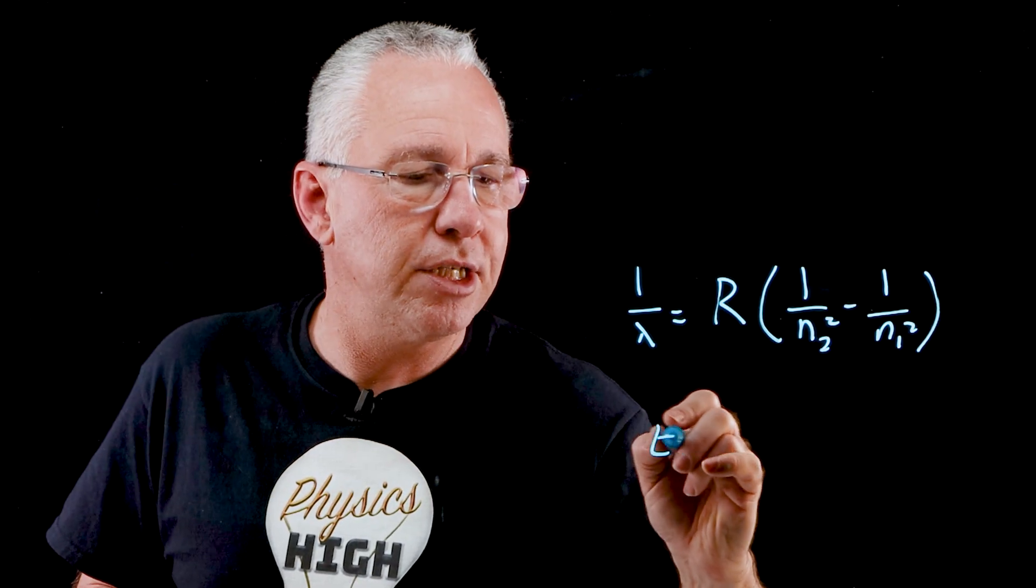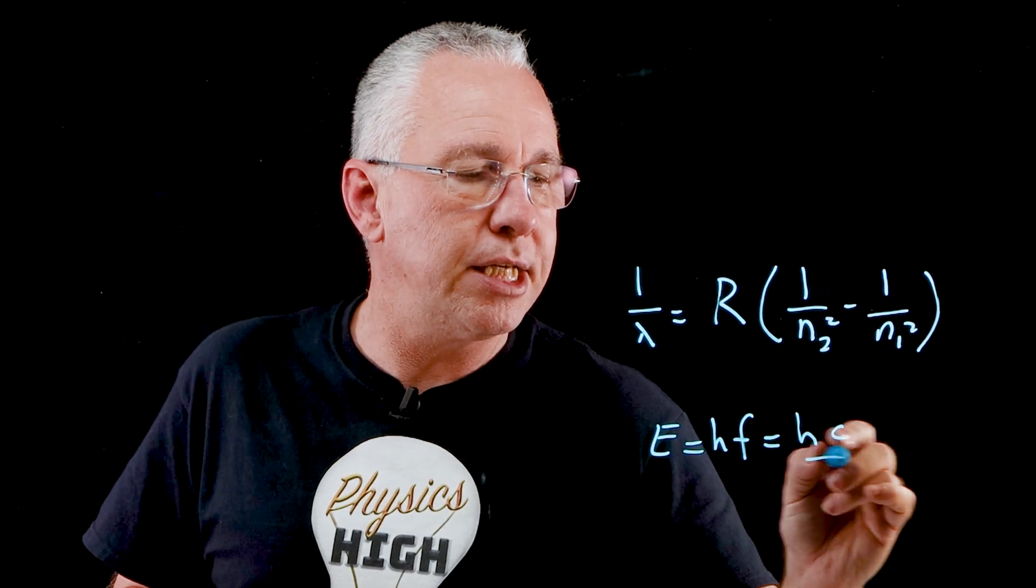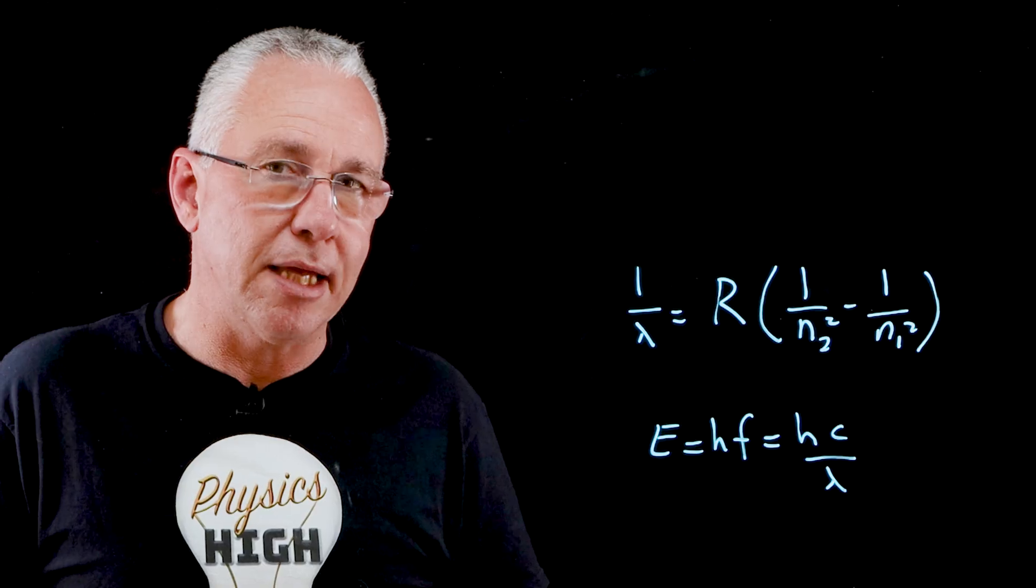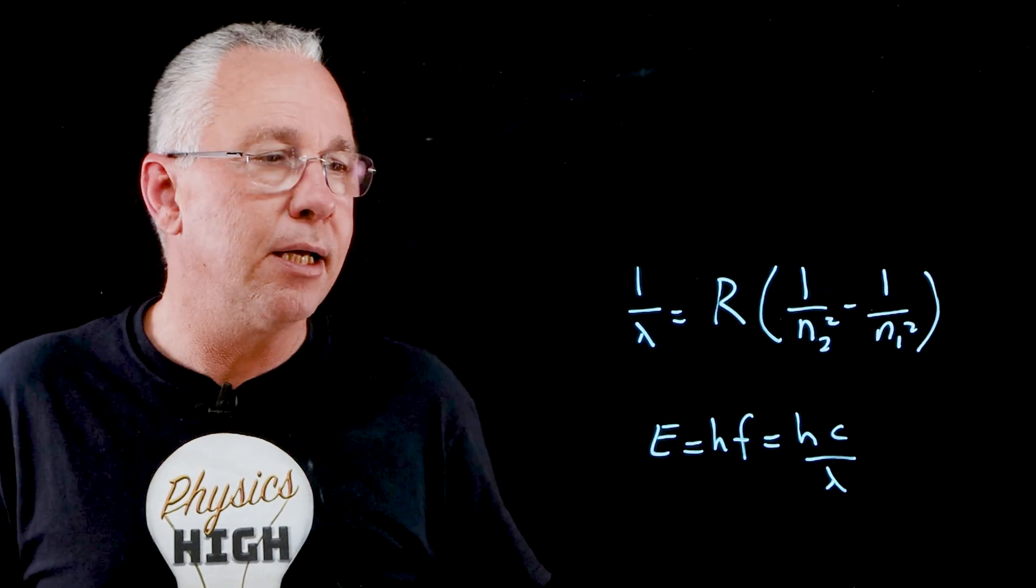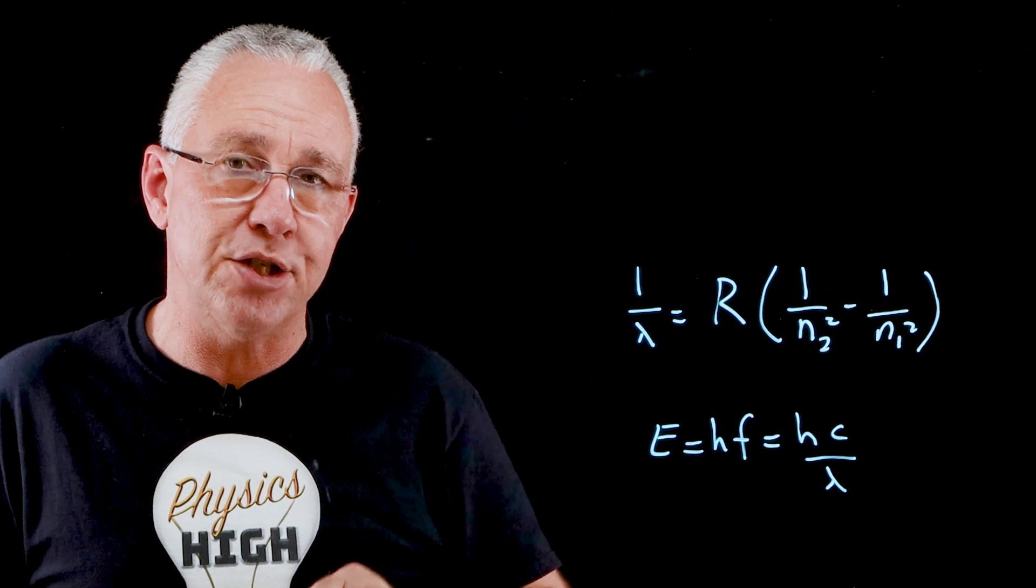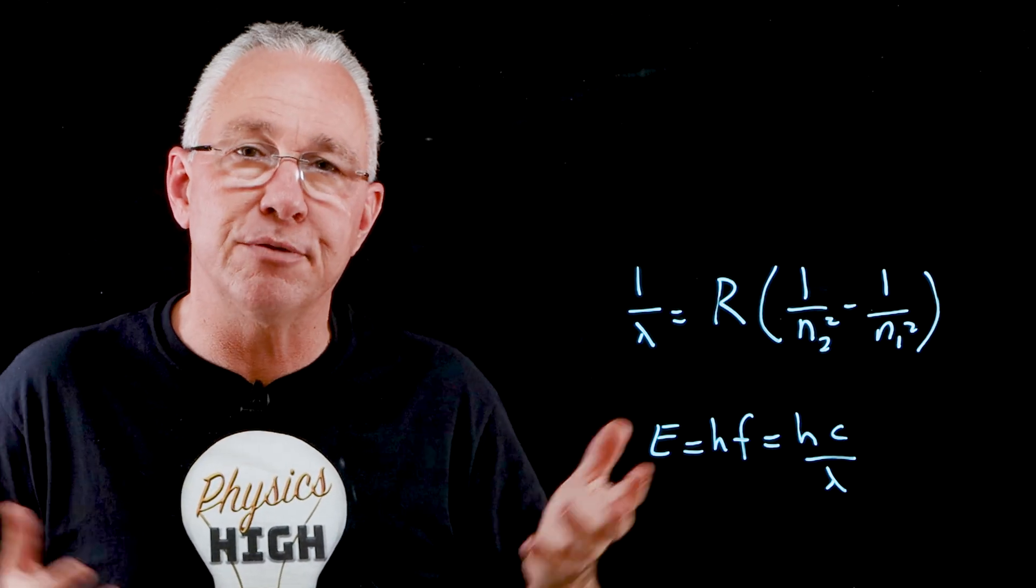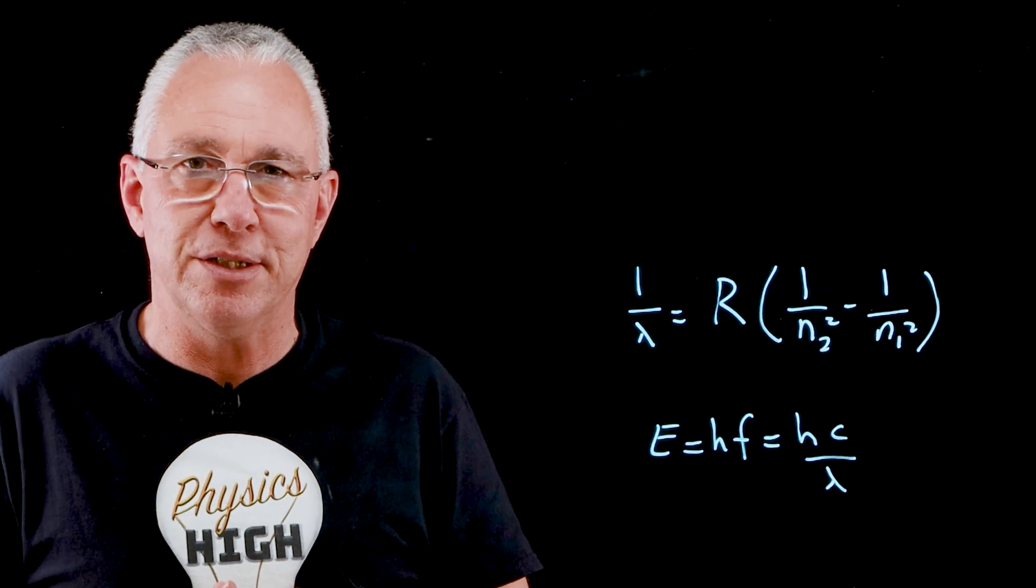Since our energy is equal to hf and f is c over lambda, we get hc over lambda. This lambda is the same lambda that we have in this formula. As a result, using Rydberg's formula, knowing the energy levels that we are changing by, we can work out the wavelength and therefore work out the energy difference between the two energy levels that occurred in the emission or absorption scenario.